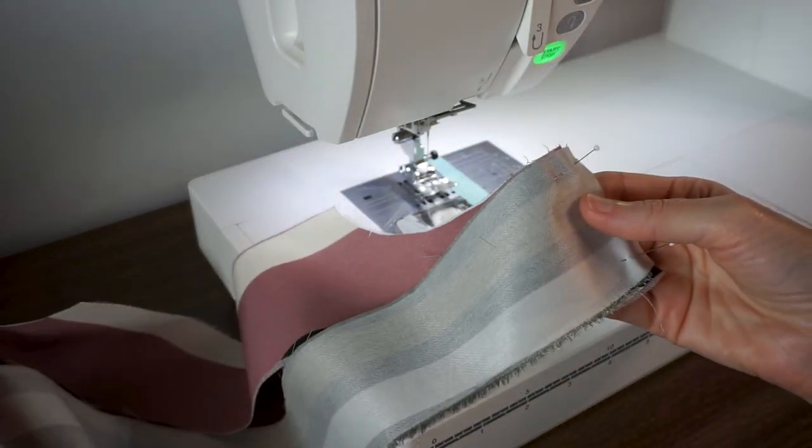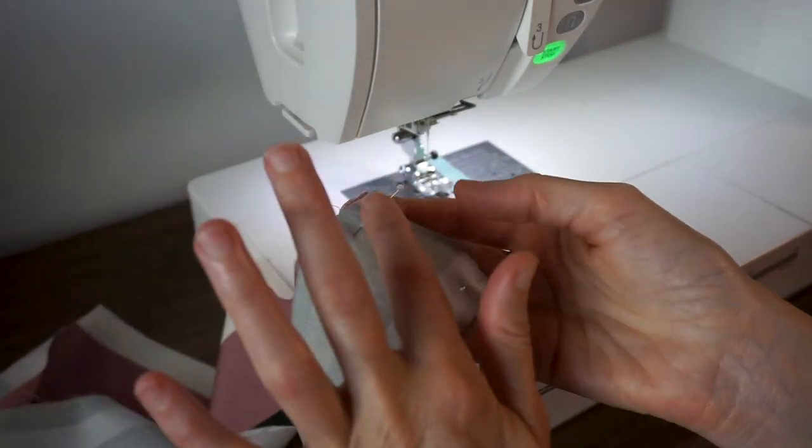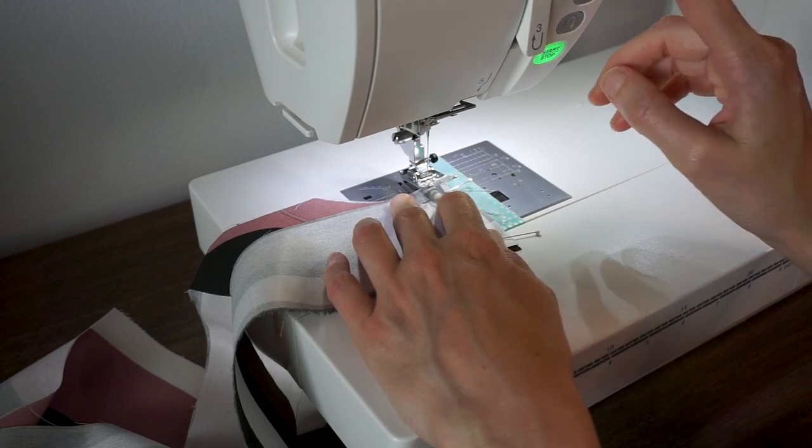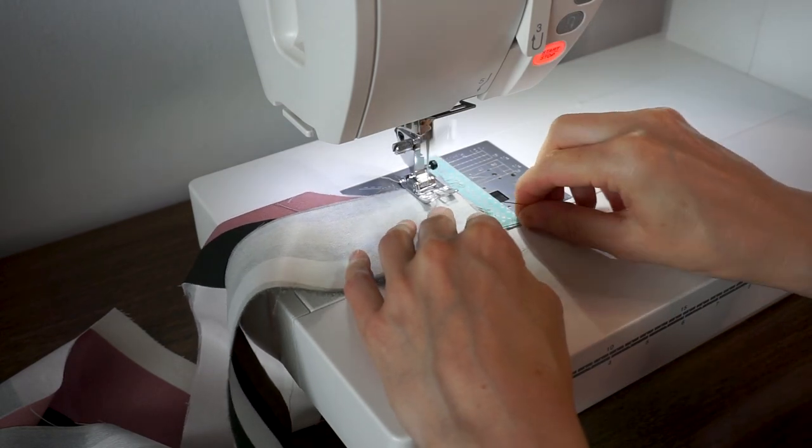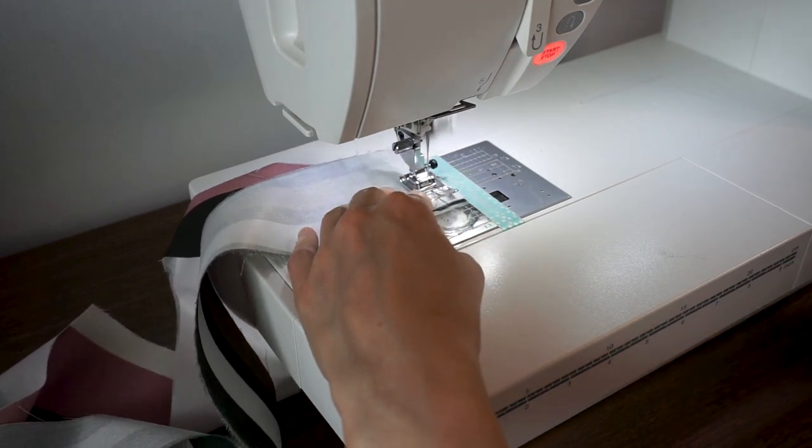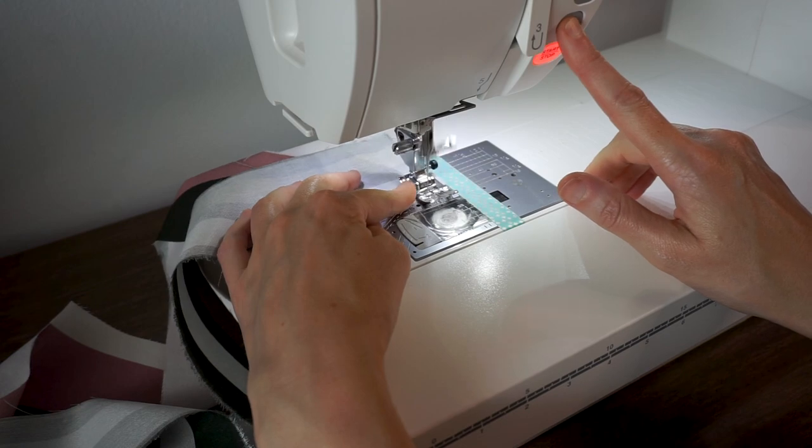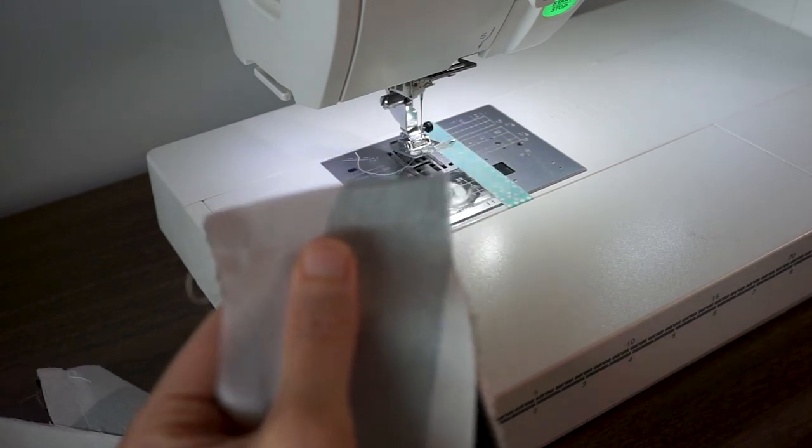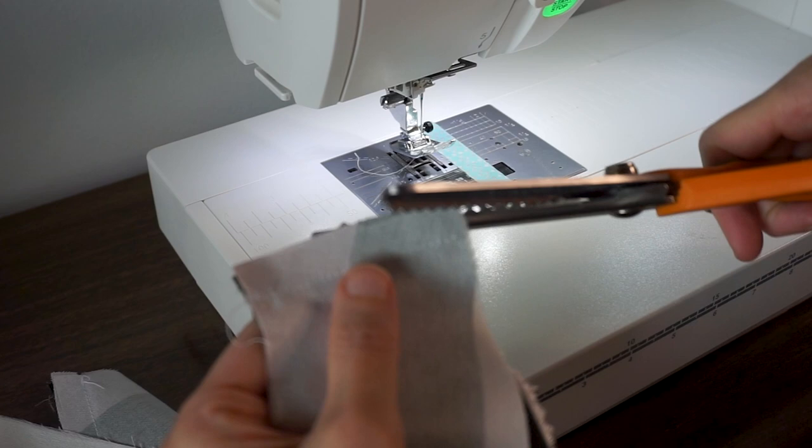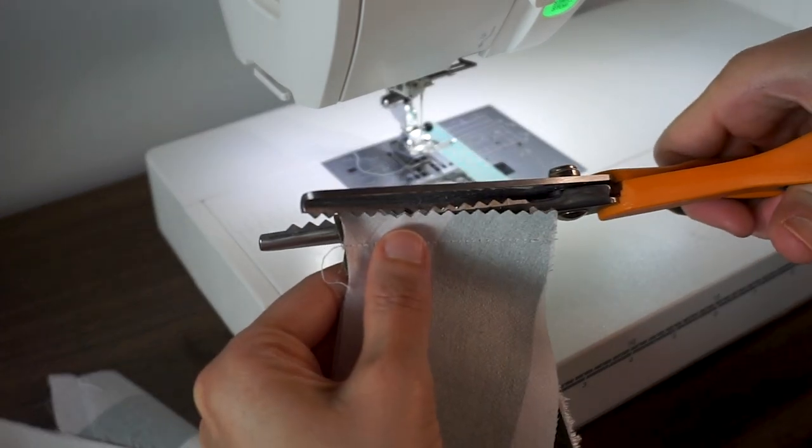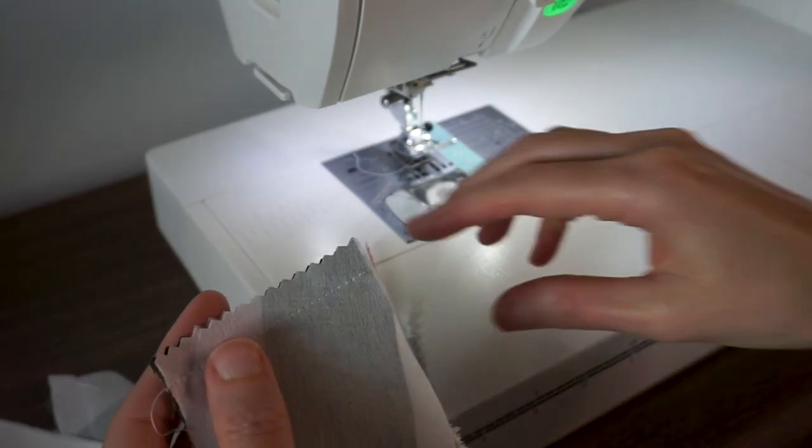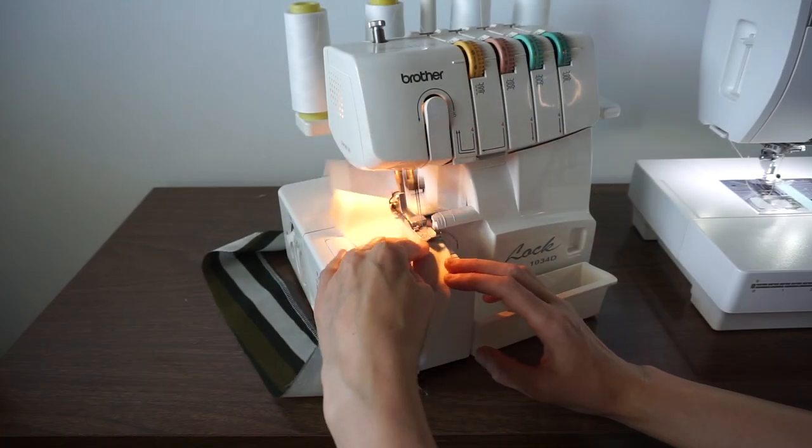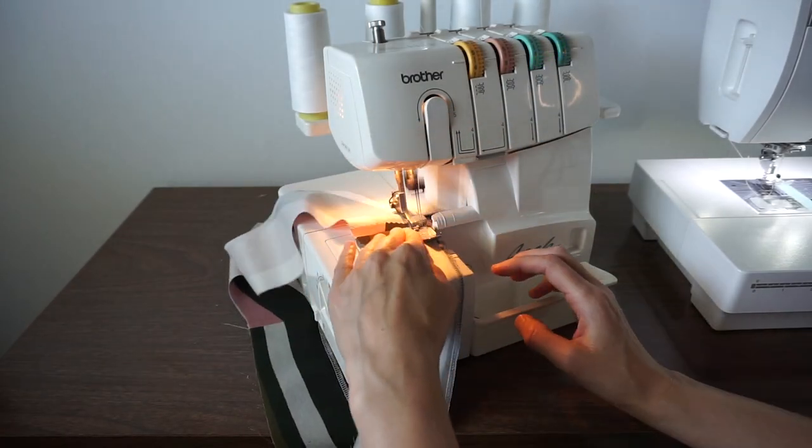Now let's sew our facings together. I have my front and back facing pinned at the side seams, right sides together, and we'll sew these at a one half inch seam allowance. This seam allowance has a low risk of fraying, so I like to just use my pinking shears. This also is less bulk than finishing it with a serger or zigzag stitch. Then you want to press the seam open—you can use your iron—and finish the bottom edge. I'm going to use my serger to finish that bottom edge.